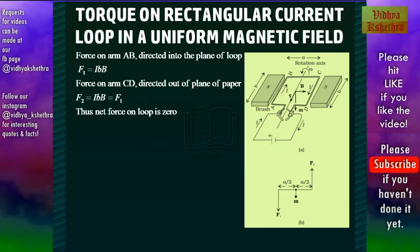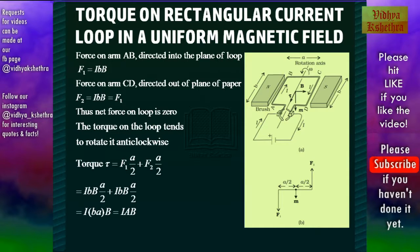The magnetic moment m acts at a distance a/2 from F1 and F2. The torque on the loop tends to rotate it anti-clockwise, and torque τ is calculated as F1 × (a/2) + F2 × (a/2), which equals i × b × a × B, where a × b is the area of the rectangular loop. Hence torque becomes τ = iAB.